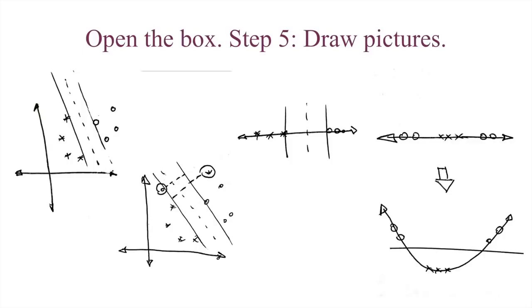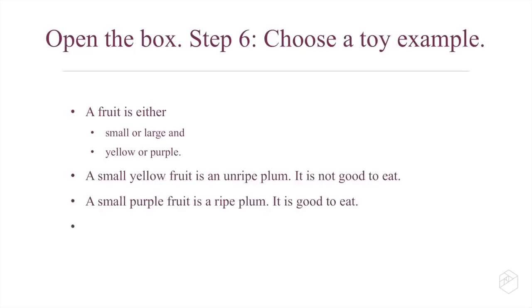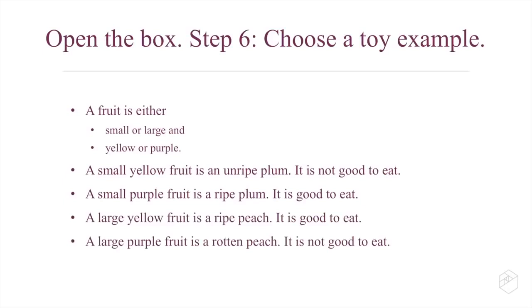Now that the ideas underneath support vector machines are crystallized but not yet fleshed out, I find it very helpful to choose a toy example. Finding an example that's simple enough that you understand it completely, but just complicated enough to illustrate the principle. For this one, I settled on fruit. Imagine that we have fruit: it can either be small or large, yellow or purple. Any small fruit is a plum — if it's yellow, it's not yet ripe; if it's purple, it's ripe and good to eat. Any large fruit is a peach — if it's yellow, it's great to eat; but if it's purple, it's rotten. In the world of peaches, there's a size axis and a color axis, and the good things to eat are at the upper left and the lower right.